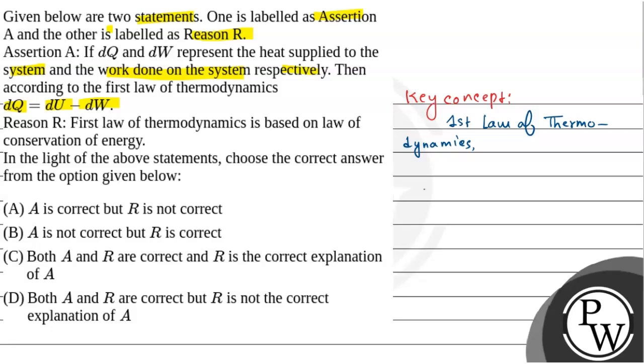And it gives us the expression: dQ equals dU plus dW. Where dQ is the change in heat, dU is the change in internal energy, and dW is the change in work done.